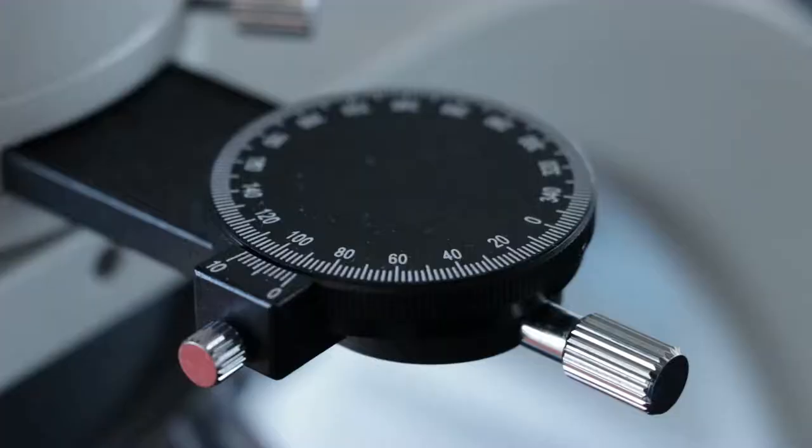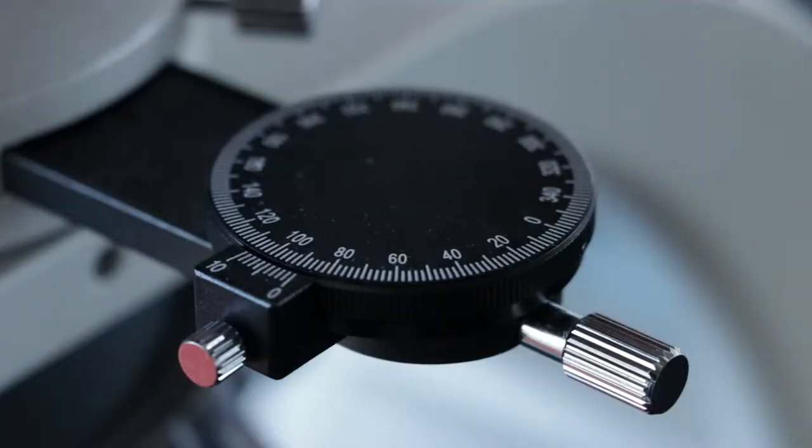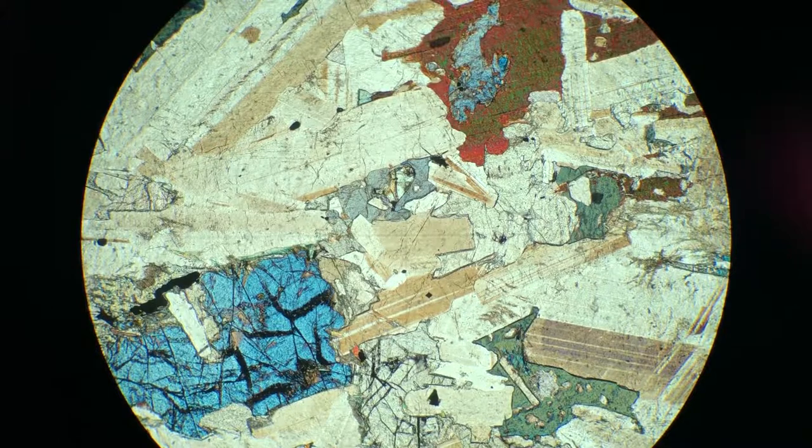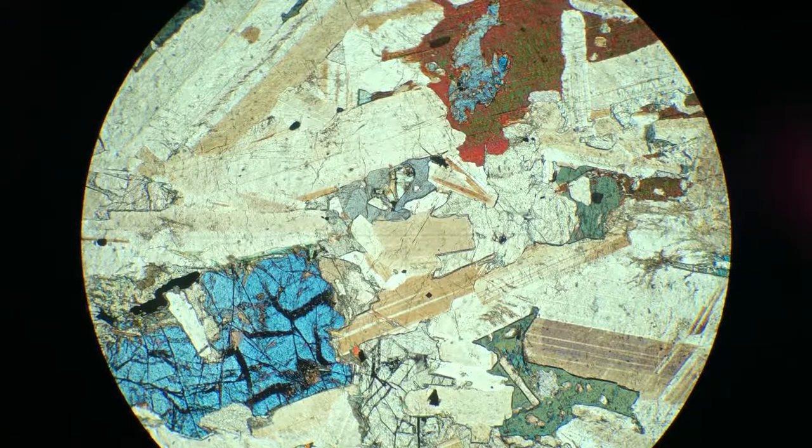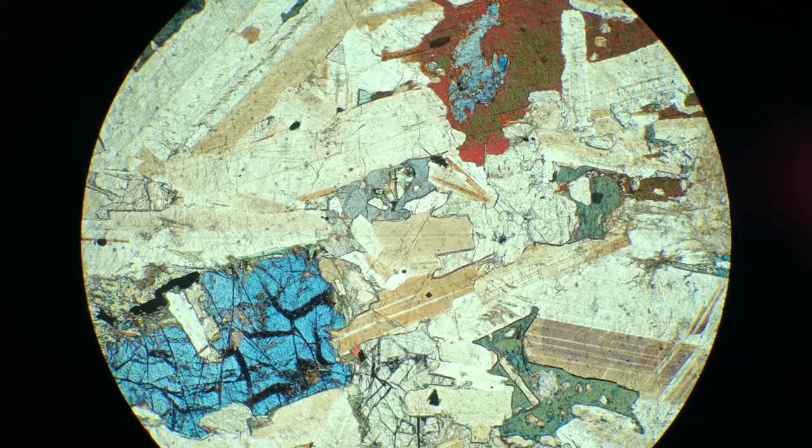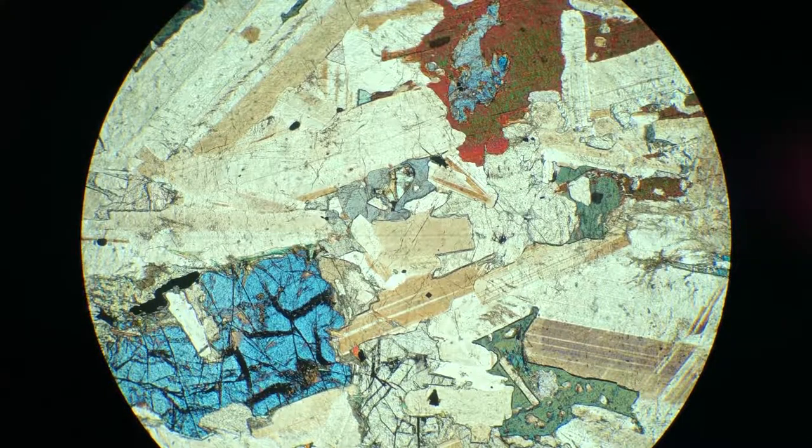This is the same thin section, with the analyzer in the wrong orientation. Have a look at the elongated plagioclase crystals. The twinning lamellae of the feldspar are now white, pale, beige, and brown, or can even turn purple.